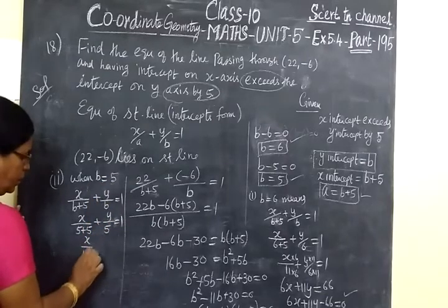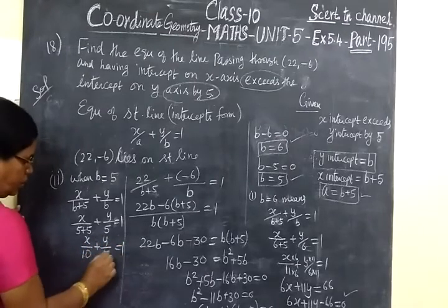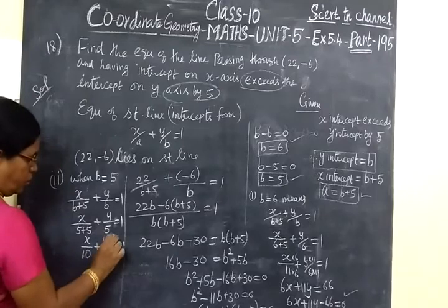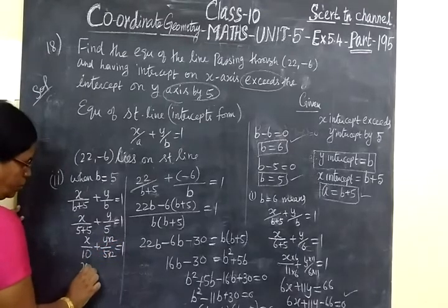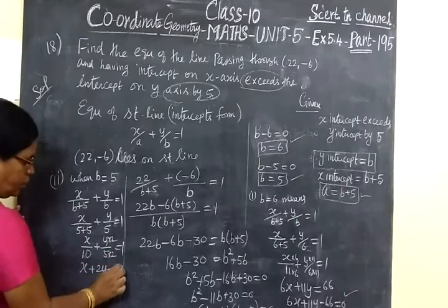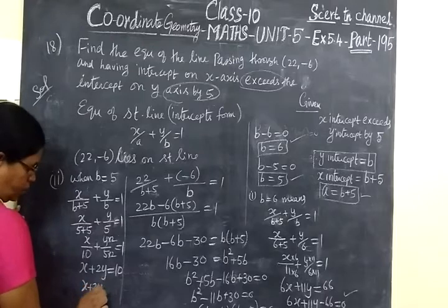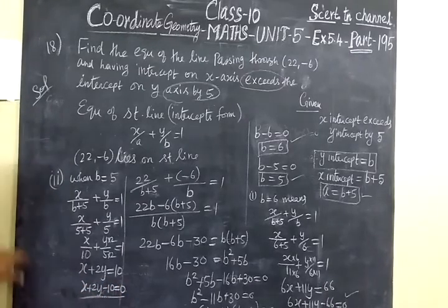This gives us x plus 2y minus 10 equals 0, which is the answer.